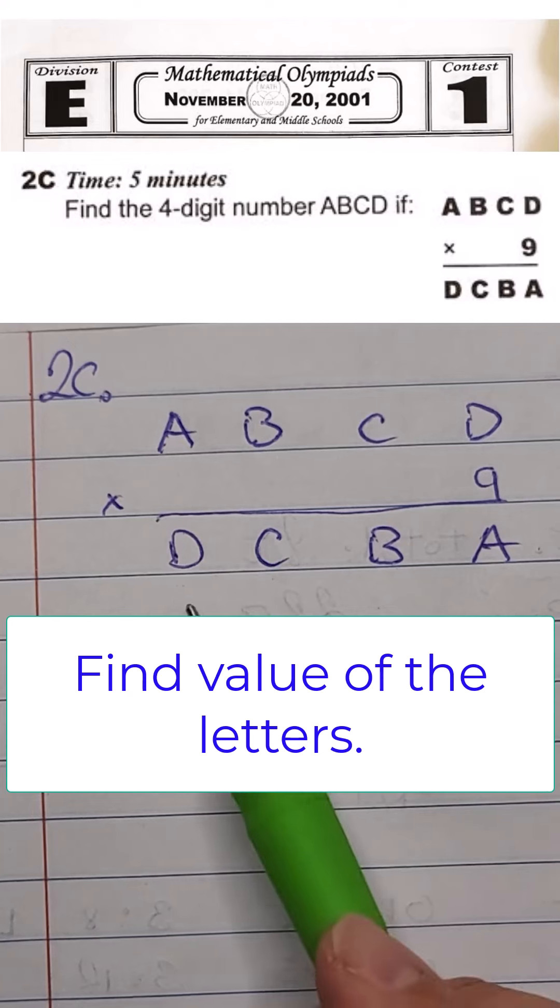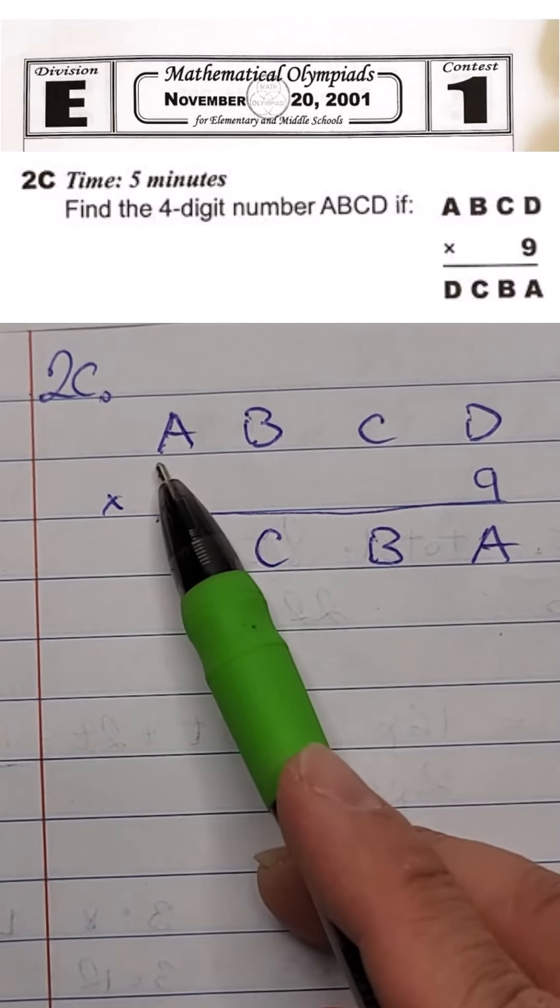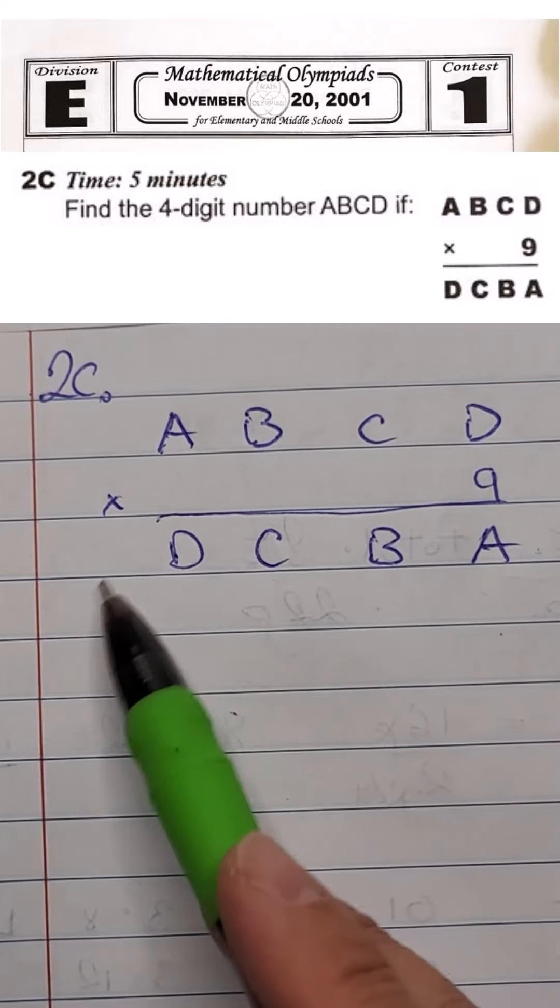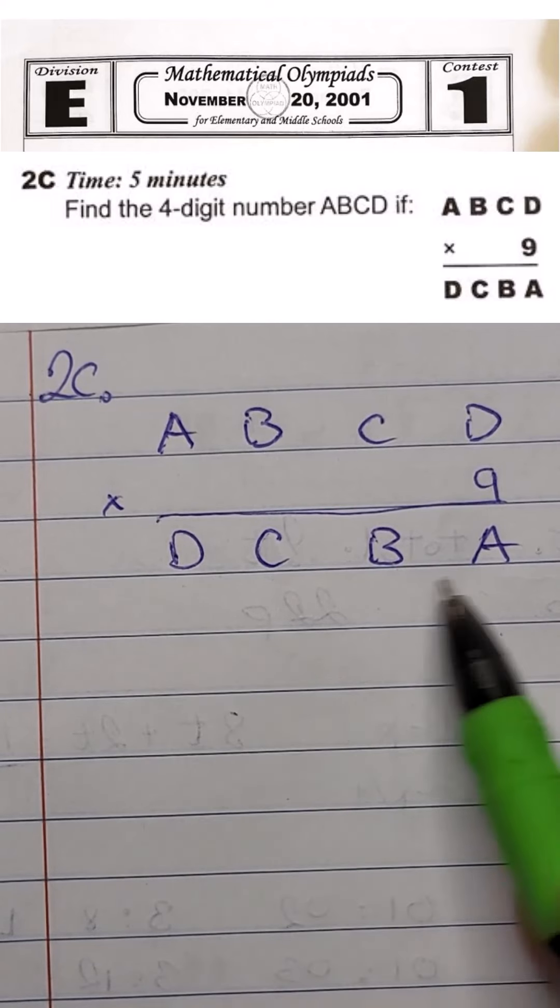We need to find the value for the letters. So looking at this, we know A cannot be greater than 1, because if A equals 2, the result would be 5-digit long, not 4 digits.